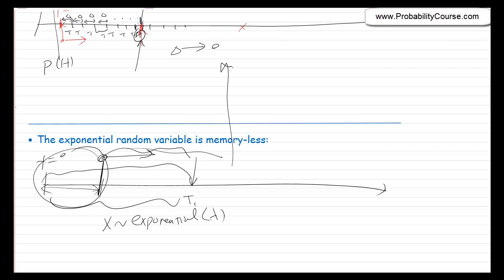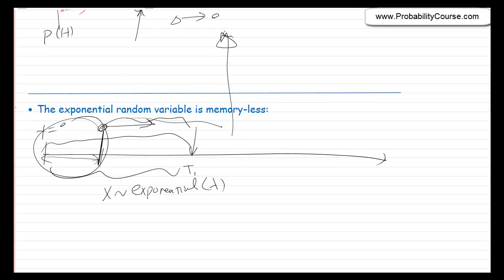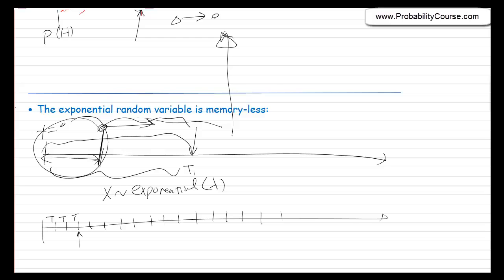Why is this true? This can be explained from our discussion of the geometric distribution. I am tossing a coin in small time intervals, and if heads I have a customer, if tails no customer. Let's say I toss the coin a few times and all of them are tails. From now on, what do I see? It's still the same thing — I have the same coin, and because the coin tosses are independent, I am still tossing the coin until I observe the first heads. So it doesn't matter how many tails I had before; the process is memoryless. That's why the exponential random variable is also memoryless.